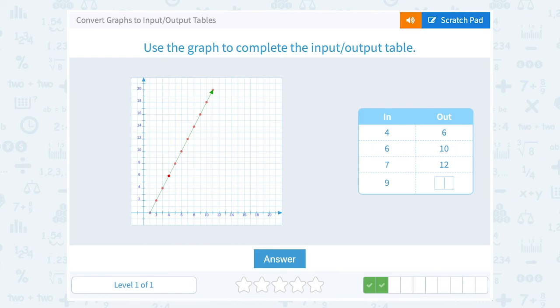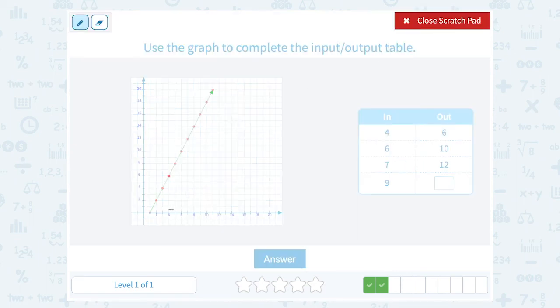Use the graph to complete the input-output table. Well, 4, 6, 6, 10, 7, 12 are all points on the graph. If we go 4 to the right and up 6, we land right here. This is the point 4, 6. So another way to think about that is if I put in 4, I get out 6. That's what they mean with the input-output.